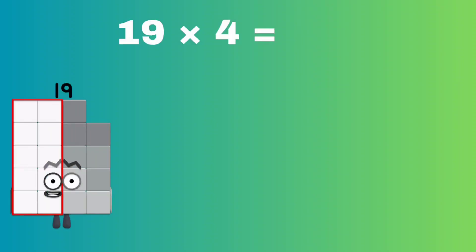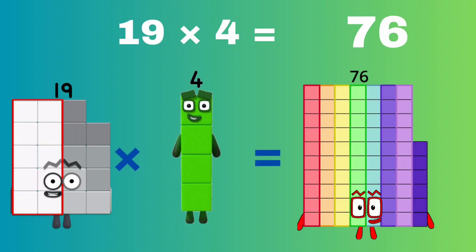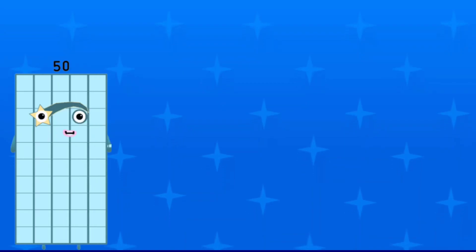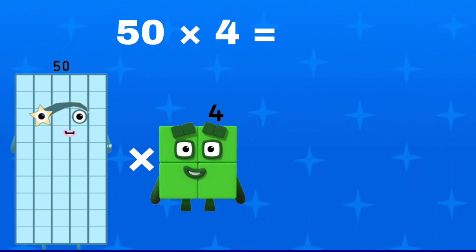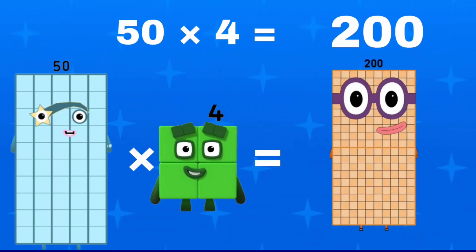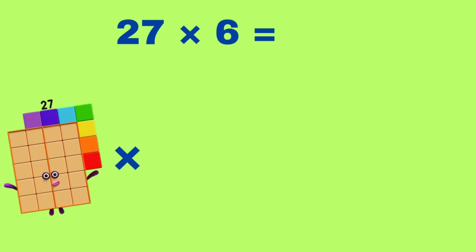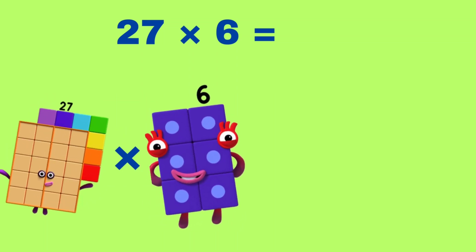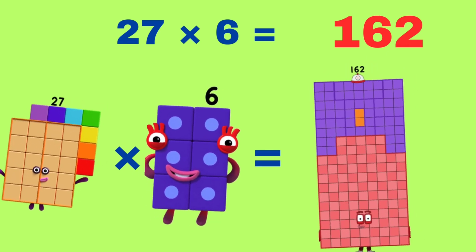19 multiplied by 4 equals 76. 50 multiplied by 4 equals 200. 27 multiplied by 6 equals 162.